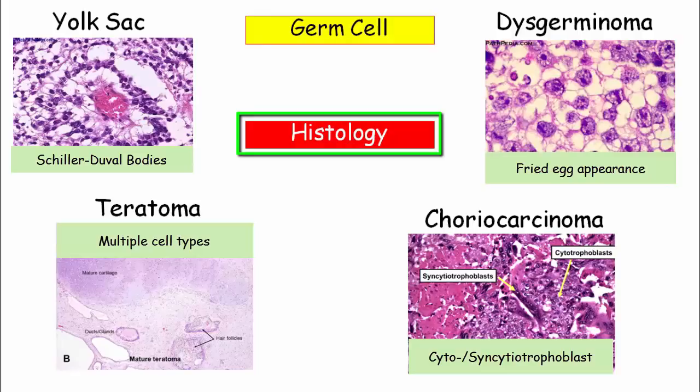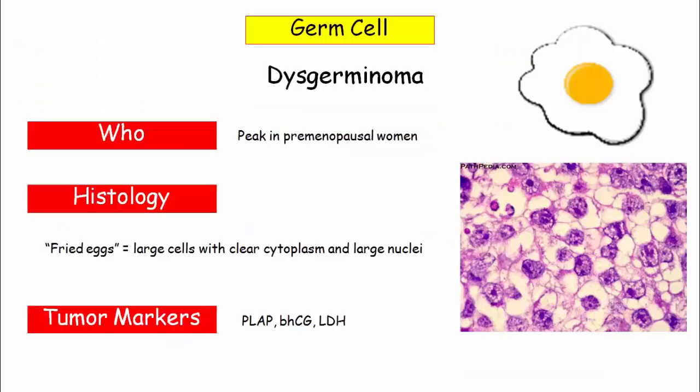Dysgerminomas are the most common malignant germ cell tumor. These share a lot of features with testicular germ cell tumors, so learning these features will double its value. Germ cell tumors, in contrast to epithelial tumors, are a tumor of young premenopausal women, even children and adolescents. Histologically, they look like fried eggs — described as large cells with clear cytoplasm and large nuclei. These tumors secrete a lot of markers; the most distinguishing and most tested is placental-like alkaline phosphatase. Also be aware that these tumors secrete beta-HCG and LDH.